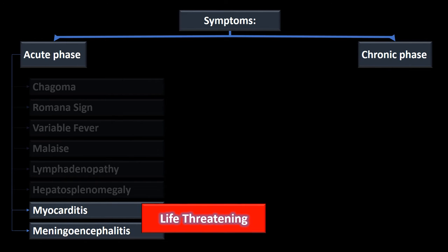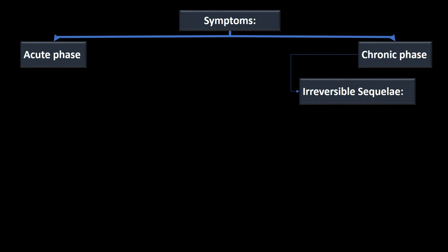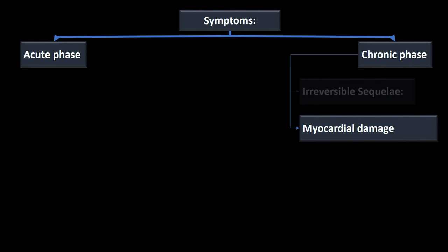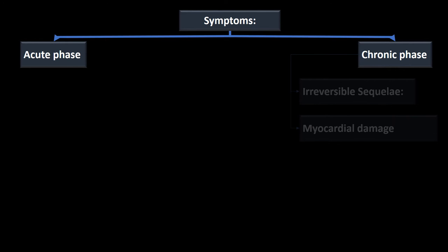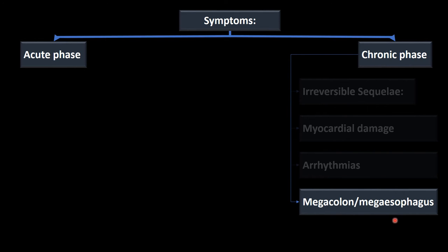Myocarditis and meningoencephalitis are life-threatening manifestations of Chagas disease. Chronically, Chagas disease can cause irreversible sequelae — long-term complications. These include myocardial damage leading to arrhythmias, as well as problems with the digestive system such as megacolon or megaesophagus, a dilation of the colon or esophagus that impedes peristalsis and prevents proper movement of food through the digestive tract.